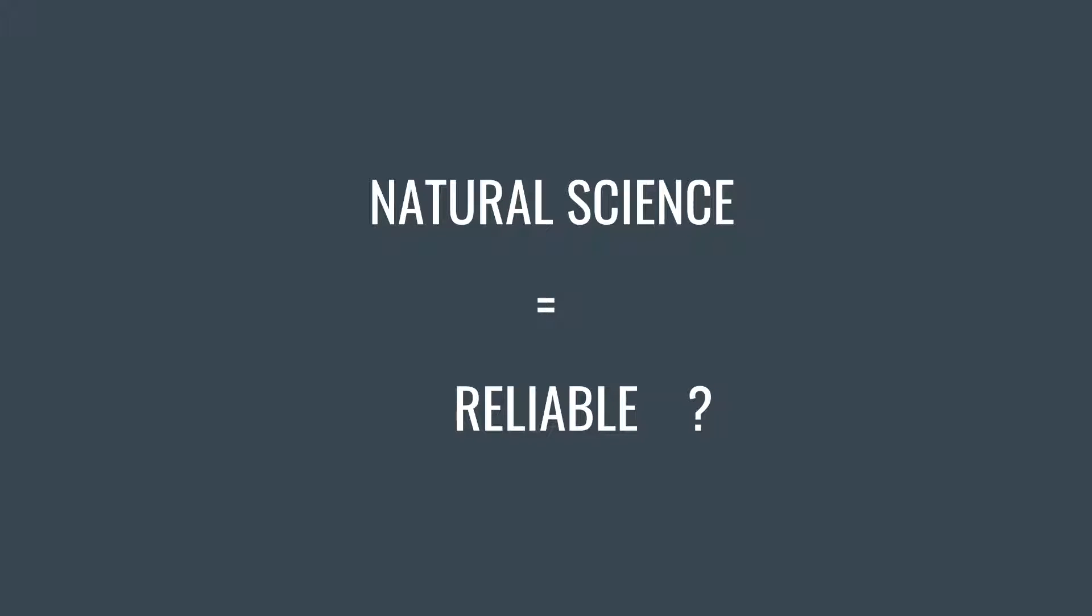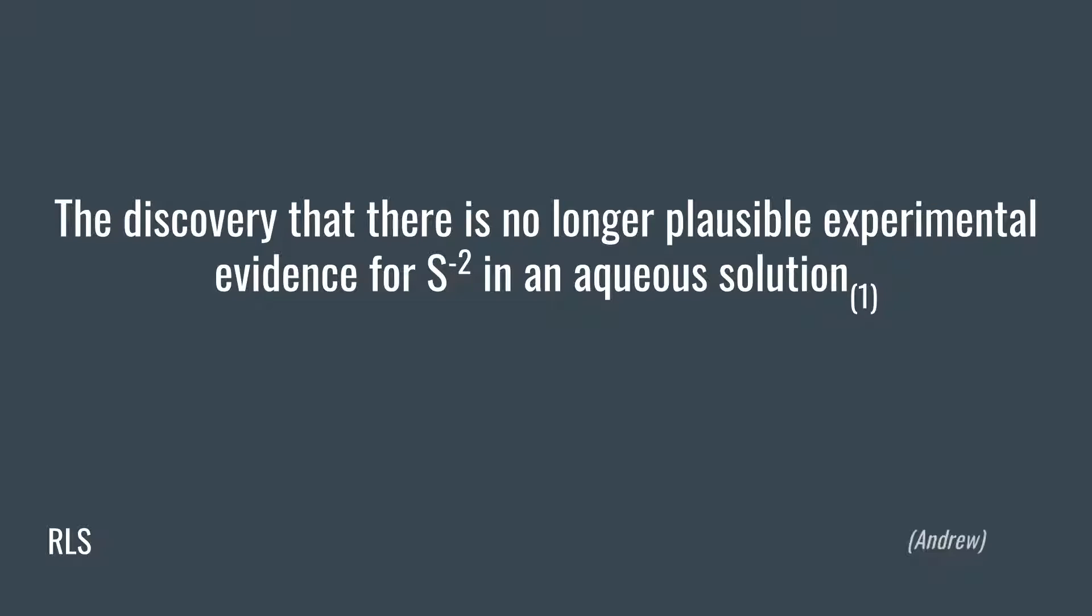My Real Life Situation is of a study that discovered how a substance used for chemistry for decades turns out to not exist. This study involves the use of various compounds of sulfur. They also used a Raman spectrometer, which is a device that uses laser to energetically excite target molecules, allowing it to detect what specific chemical is present. From this, they discovered that there were no traces of sulfur in an aqueous solution and concluded that there is no longer any plausible experimental evidence for sulfur in an aqueous solution.